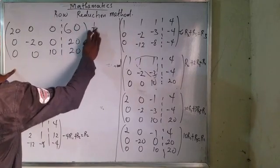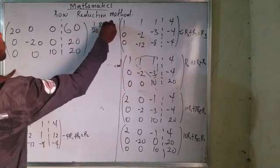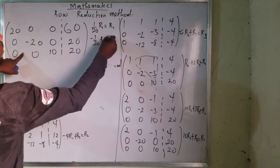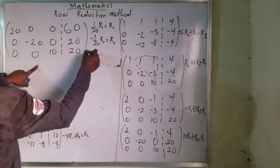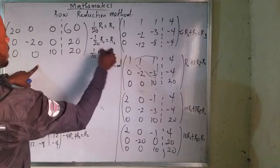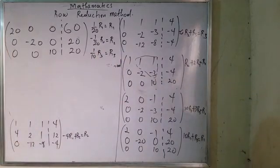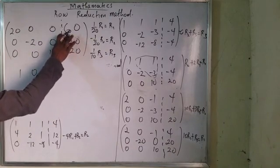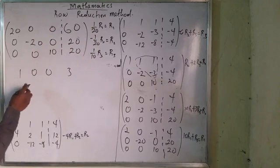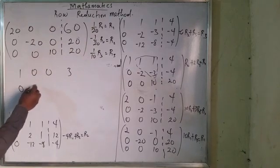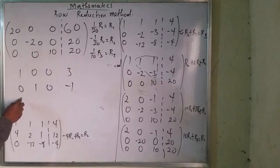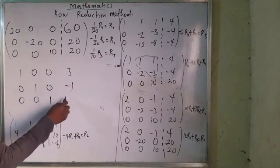How do I deal with that? I can now say: 1 over 20 R1 equals R1, minus 1 over 20 R2 equals R2, and the last part is 1 over 10 R3 equals R3. I think I've gotten something good now. This one becomes 1, 0, 0, and 20 divided by this which is going to be 3. And here will become 0, 1, 0 — minus 20 — that would be minus 1. And that is 0, 0, 1 — this one will be 2.